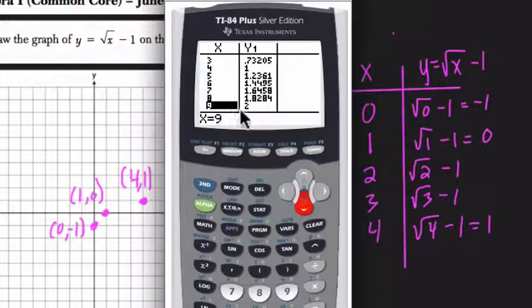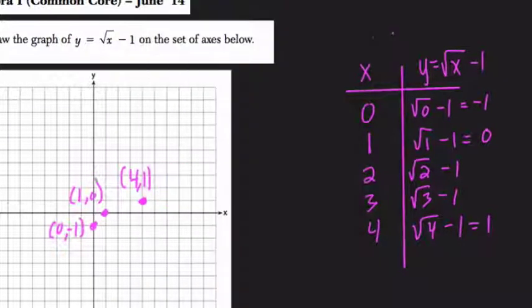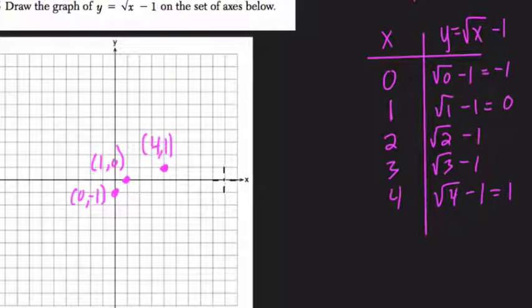This table tells you corresponding inputs and outputs to plot. So like our next plot is (9, 2). That's when we can actually plot. So here, if we have 5, 6, 7, 8, 9, and then 2, this point right here.